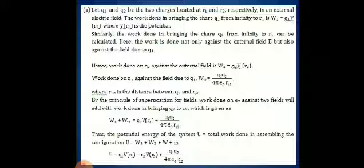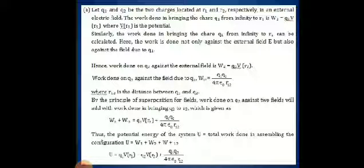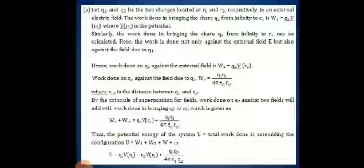Similarly, the work done in bringing the charge q2 from infinity to a point r2 can also be calculated. While bringing q2, remember that we have to do work against the electric field which is already present and also due to the field produced by charge q1. So, the work done on q2 against the electric field is given by W2 is equivalent to q2 into V of r2, where V of r2 is the potential developed due to the electric field at the point r2.